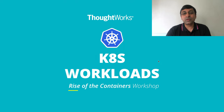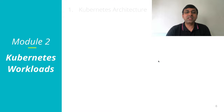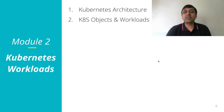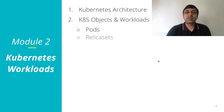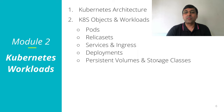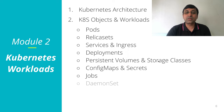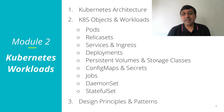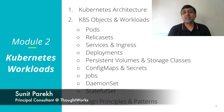In the second module, Kubernetes workloads, we start with Kubernetes architecture. We look at all the Kubernetes objects and workloads, also known as Kubernetes resources. We start with pods, replica sets, services and ingress, deployments, volumes, storage classes, config maps and secrets, jobs, daemon sets, and stateful sets. And at the end, we'll talk about some design principles and patterns that we have seen in production.